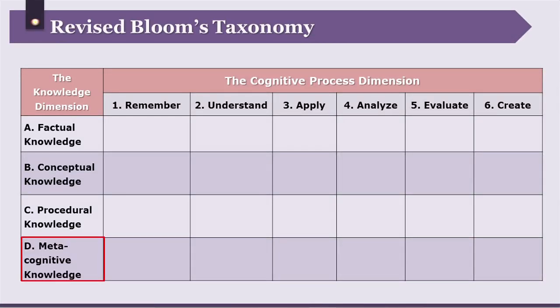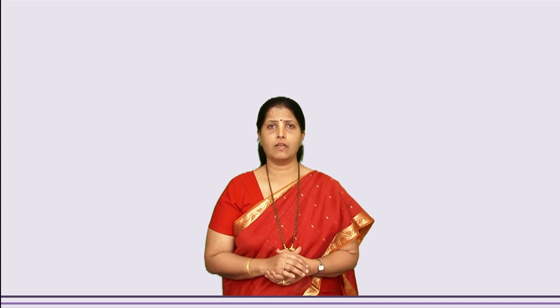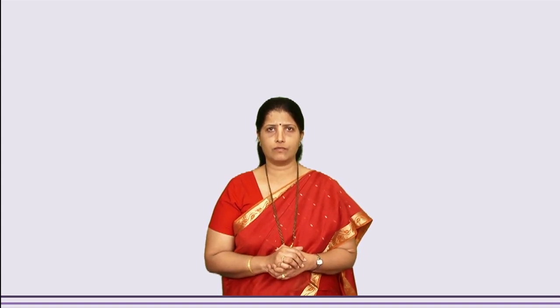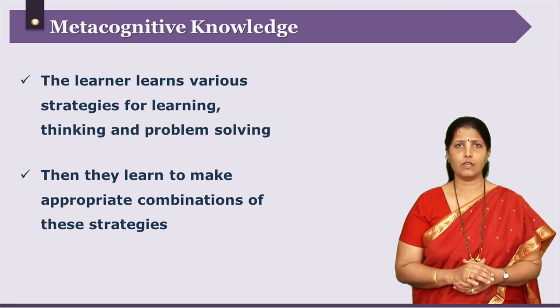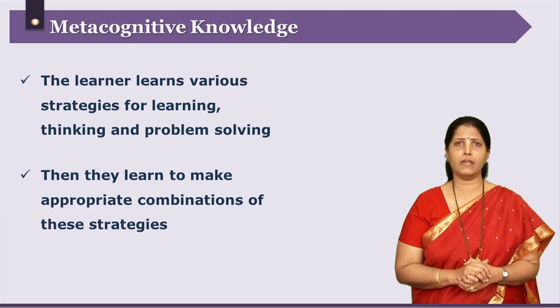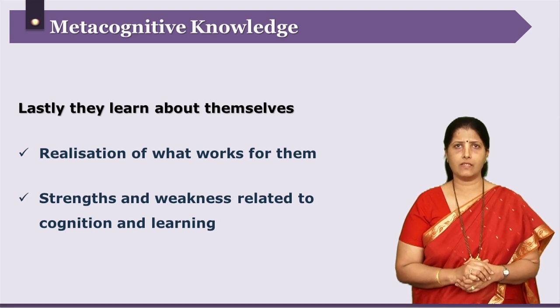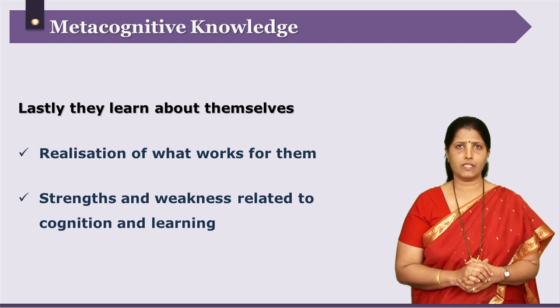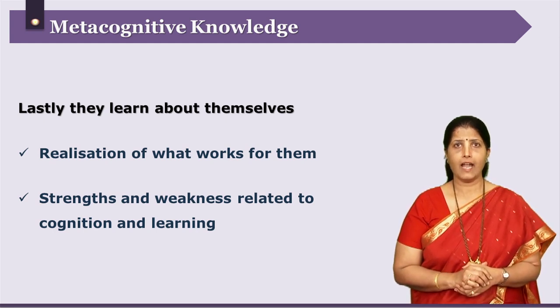Now we have come to the last category of knowledge dimension: metacognitive knowledge. Metacognitive knowledge is about making the learner aware of their own cognition, their own problem-solving skills, and their own understanding — preparing them so that they are responsible for their own knowledge. Students learn different strategies for learning, problem solving, and managing themselves. As they grow and mature, they learn how to make combinations of these strategies to solve their own problems, learn about themselves, learn which strategies work best for them, and learn about their own strengths and weaknesses.